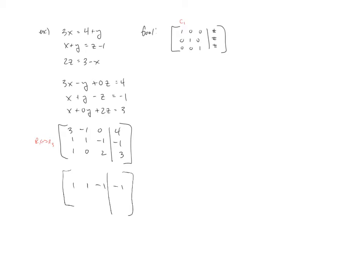That means row 2 isn't going to change. I'm going to copy that down. Row 1 would now be 1, 0, 2, 3. And row 3 would now be 3, negative 1, 0, 4.